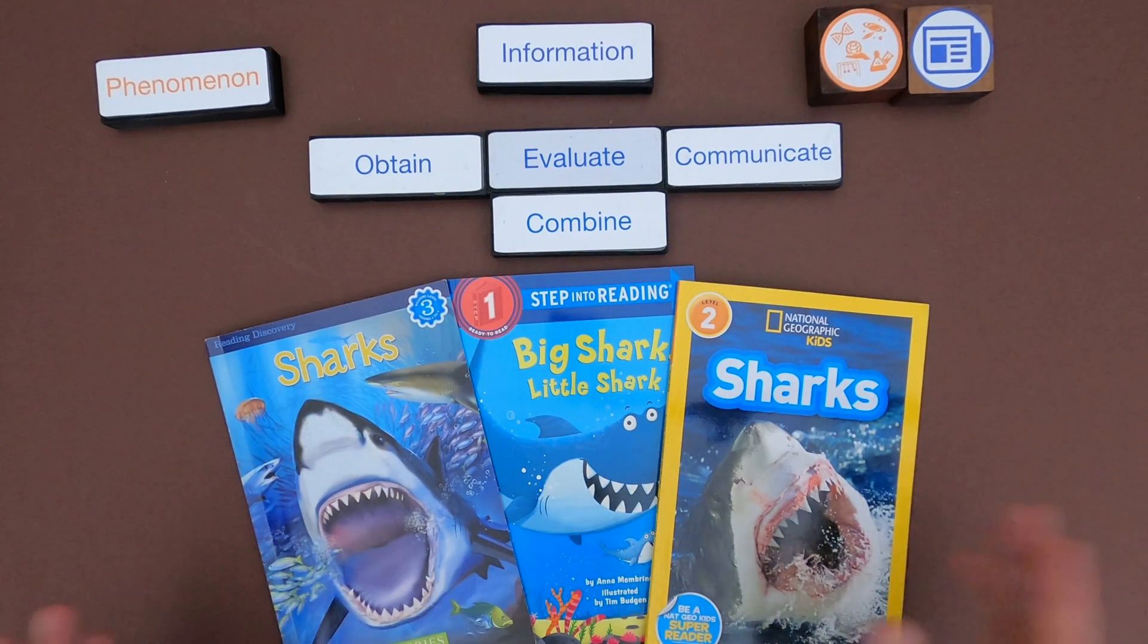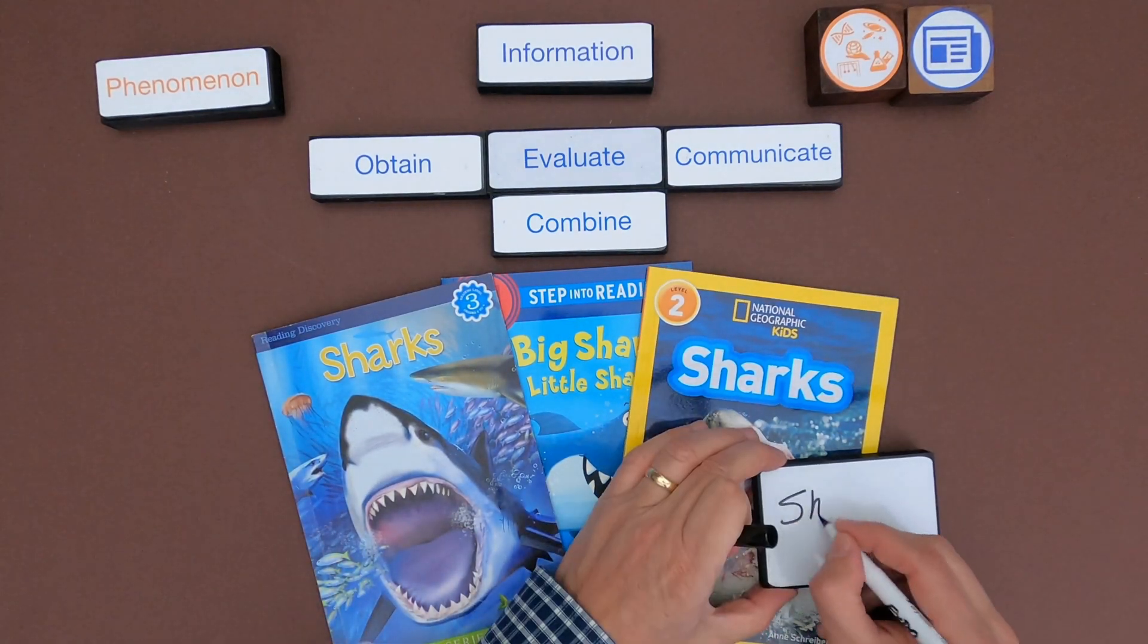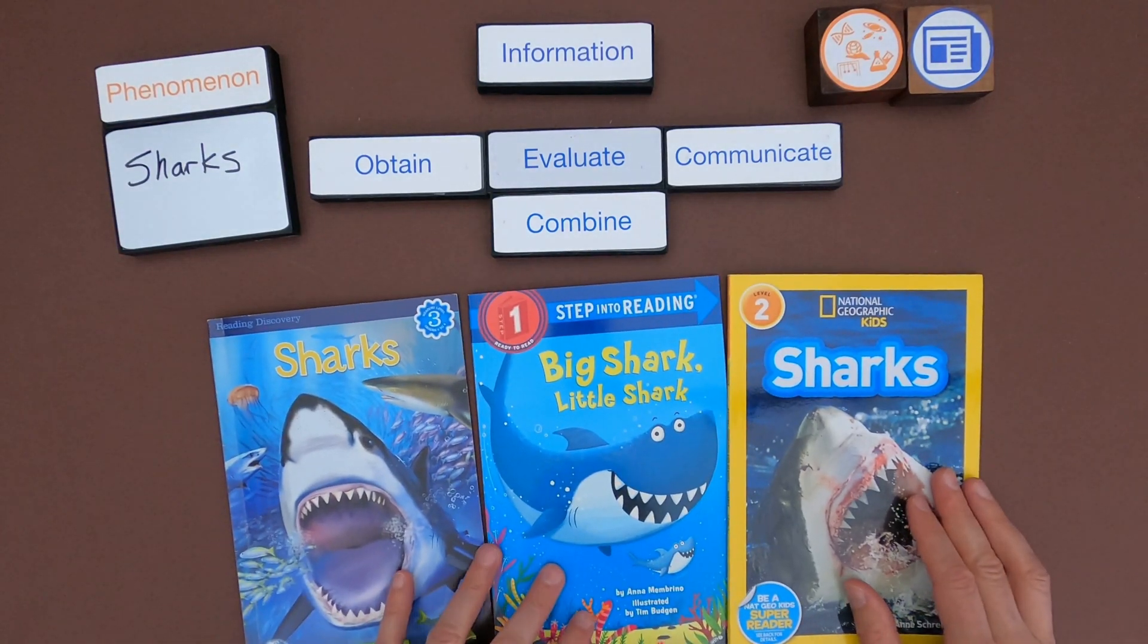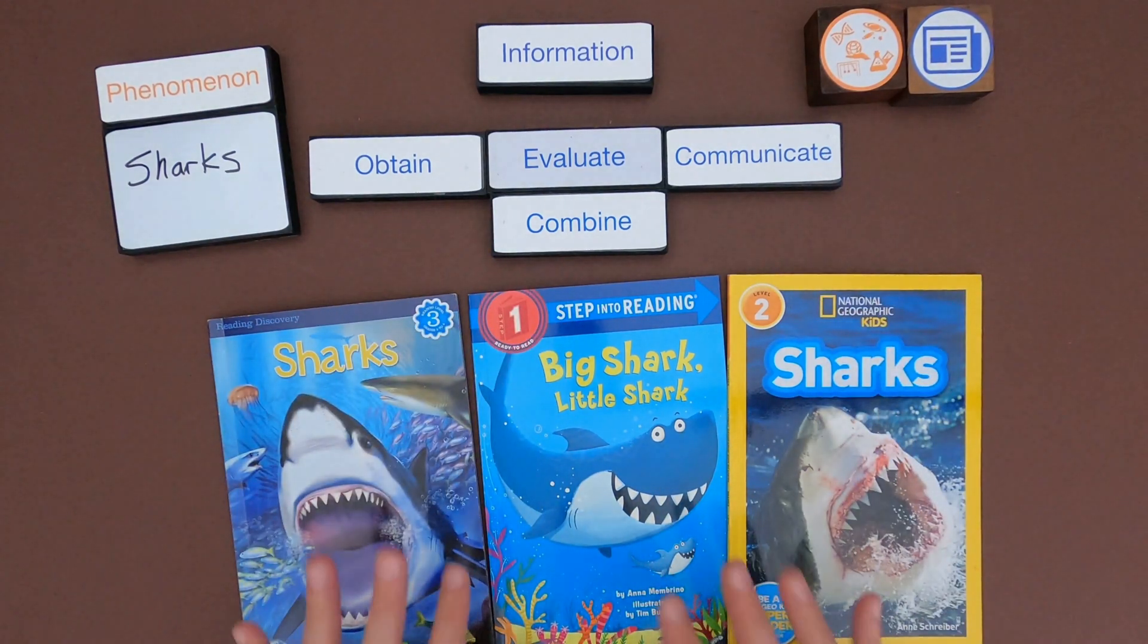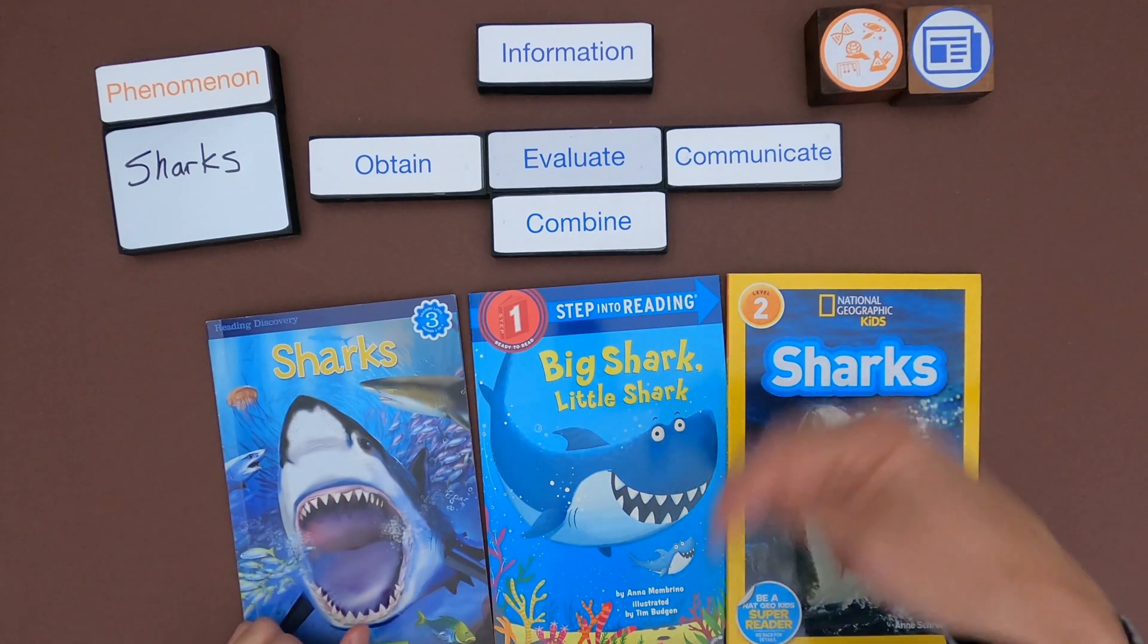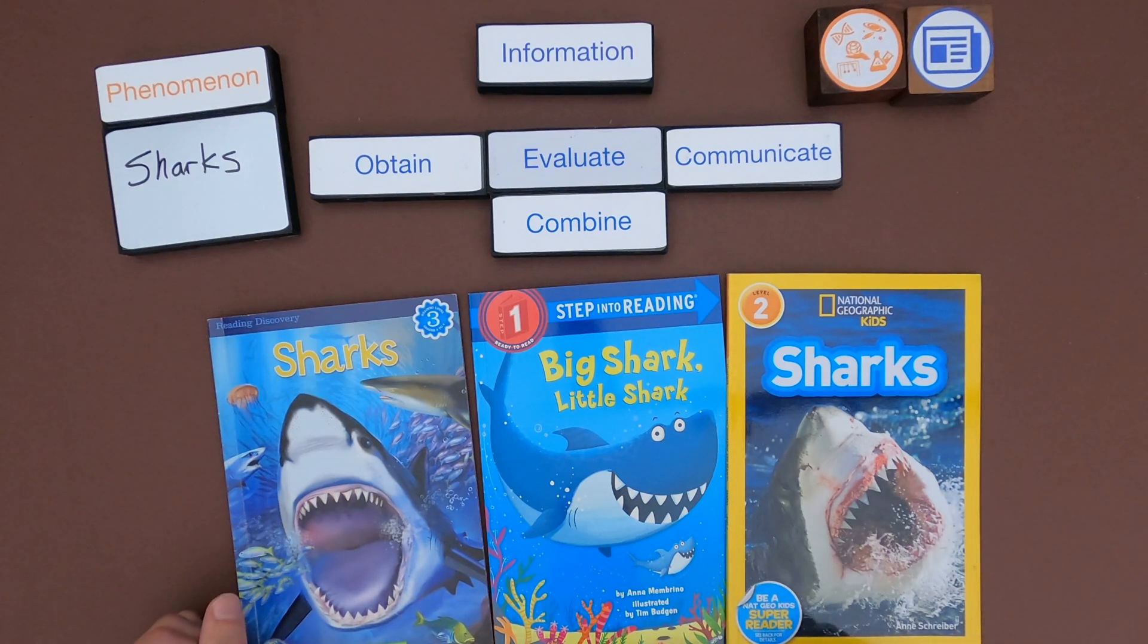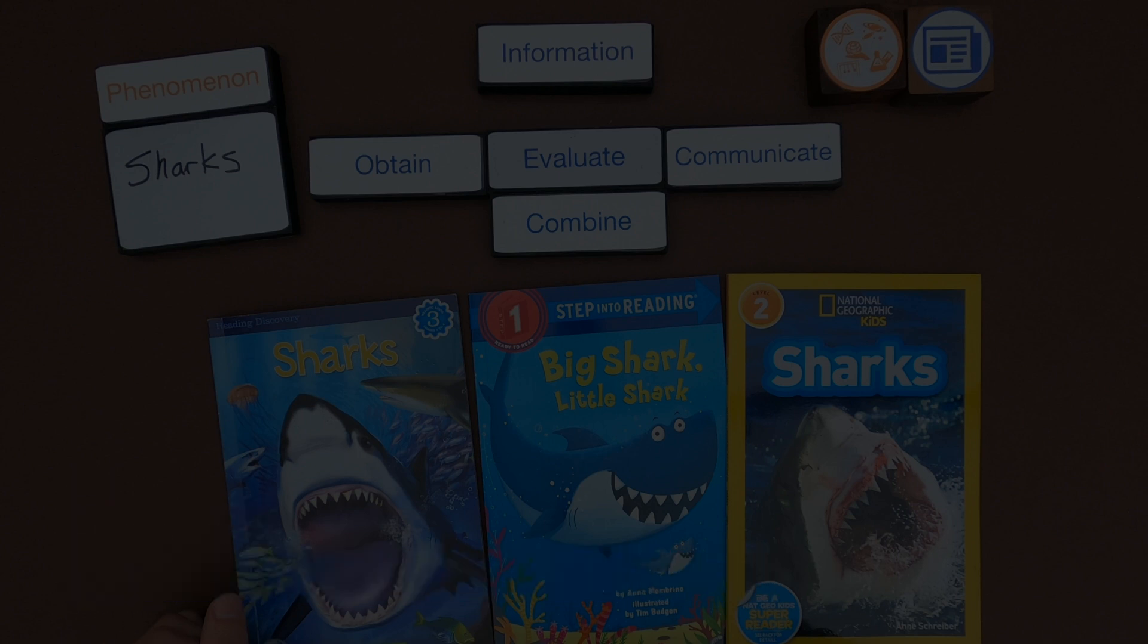Okay. For the second one, we've got obviously three texts that are on sharks. And so let me write down the phenomenon. And then what I would encourage you to do is go through and obtain information and combine information from these sources. First thing you want to do is make sure are these all informative texts or any of these kind of fiction? We'd want to remove that. And so then pause the video, do that. I'll put links to selected portions of the text down below. And then unpause, come back and we'll see how our thinking compares.